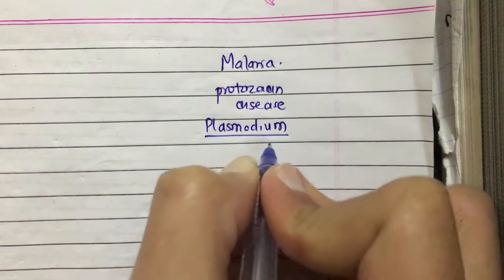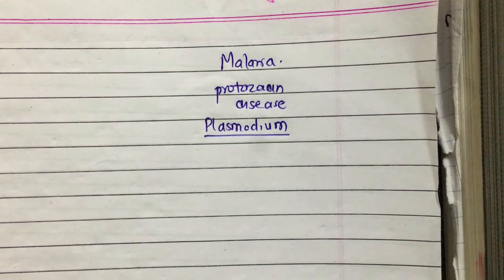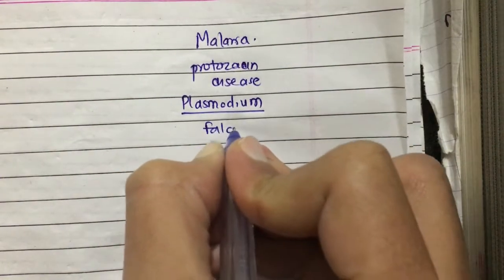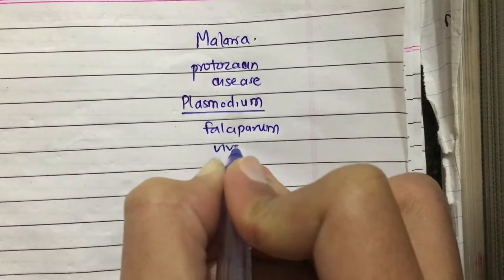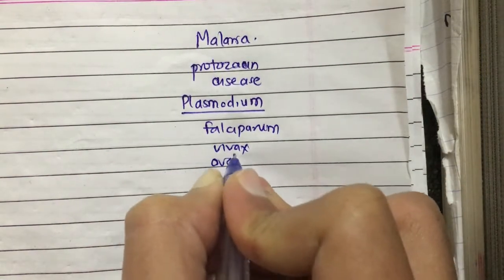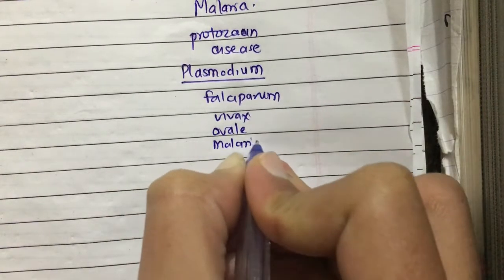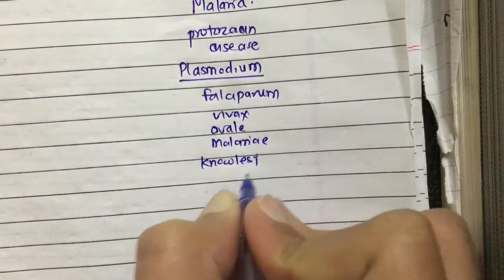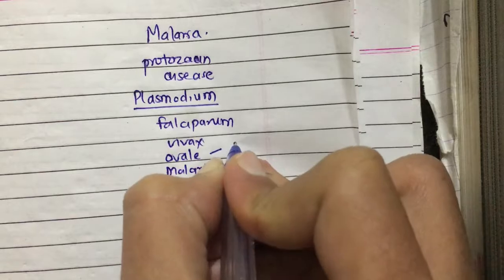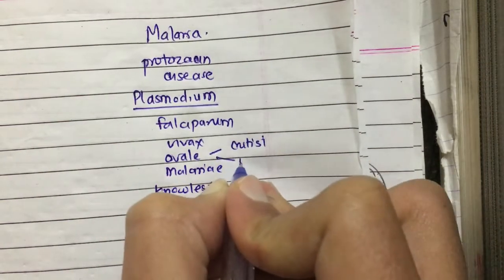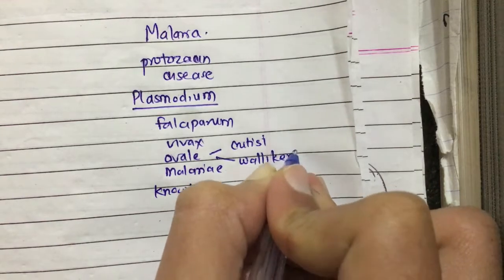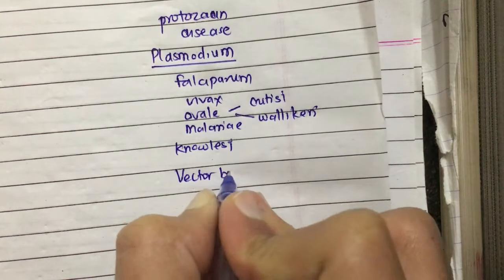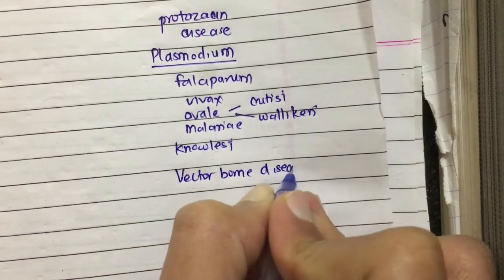Six species of Plasmodium cause all types of the disease that can occur in humans: Plasmodium falciparum, Plasmodium vivax, Plasmodium ovale, Plasmodium malariae, and Plasmodium knowlesi. Plasmodium ovale is of two types: curtisi and wallikeri.